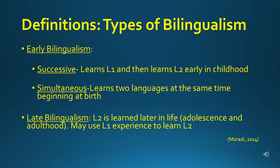Simultaneous bilingualism means a child is learning two languages at the same time beginning at birth. For example, a boy raised in a Spanish-speaking home, but everyone in his school and surrounding environment speak English. The boy is exposed to two languages and the sounds of those two languages right from birth.